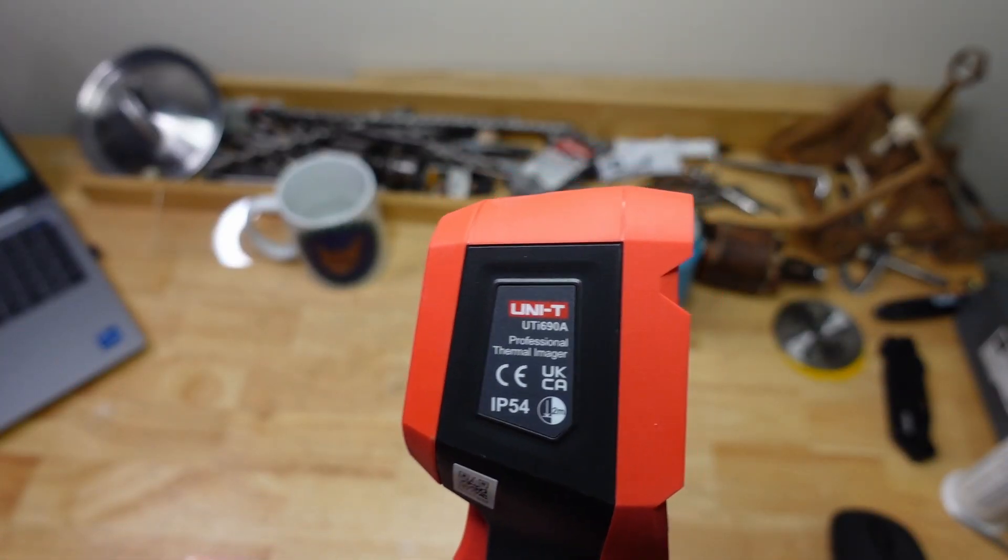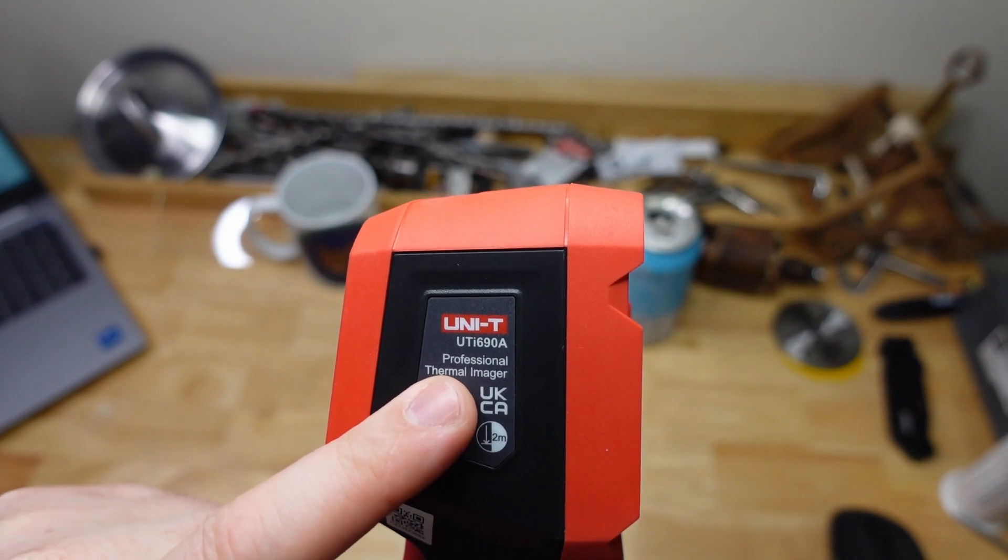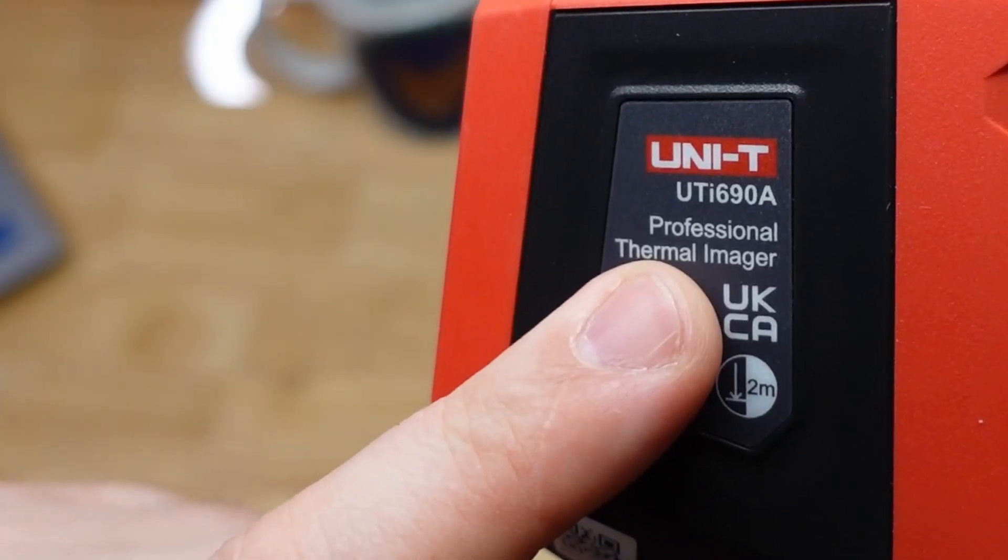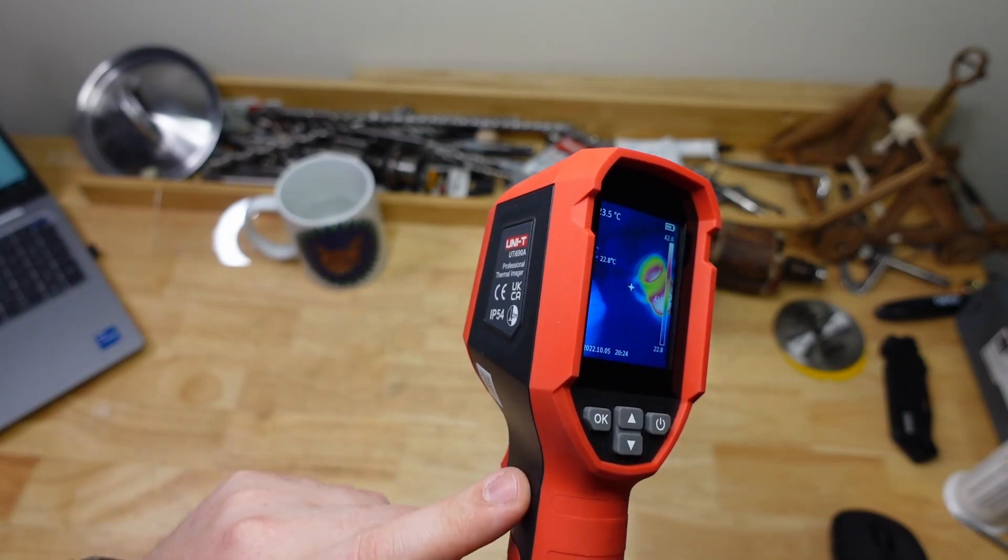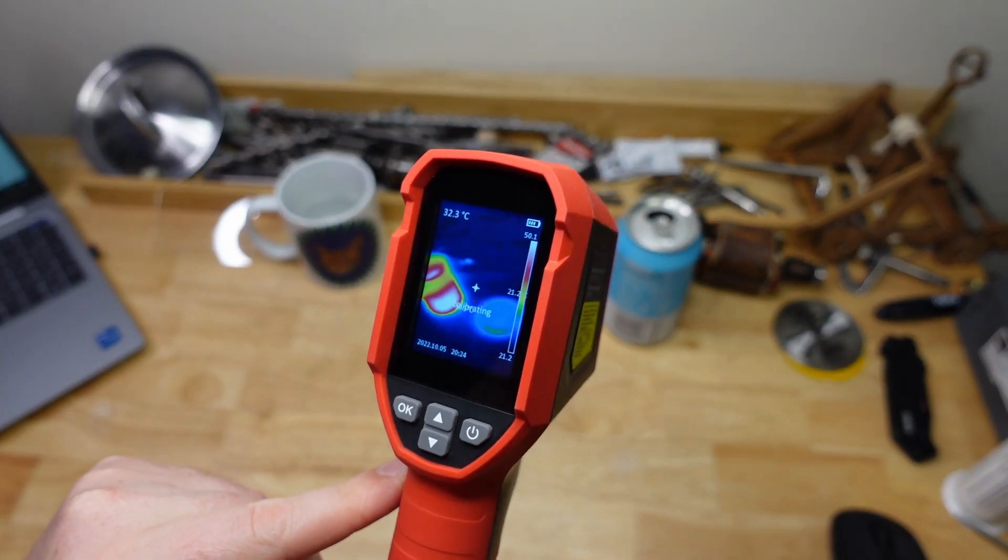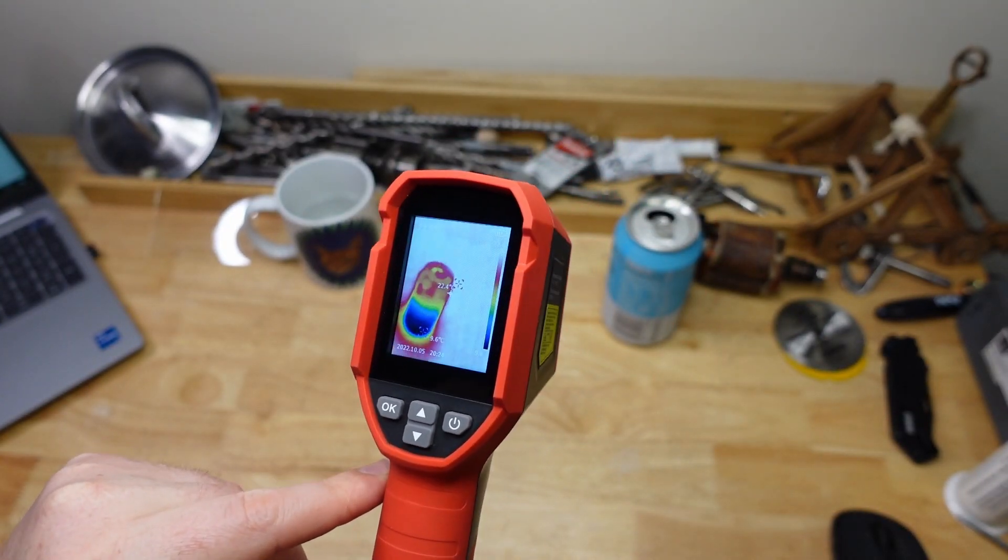So the camera I'm using today is the Unity UTI 690A, and who doesn't love a good UTI? So this is a pretty cheap but pretty good little camera, and I'm just going to use it today to show you how the whole thermography caper works.